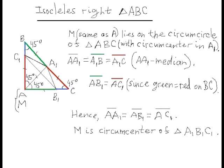We know from the previous lesson that points of tangency of excircles to two other sides of triangle ABC divide these sides into segments so that two green segments opposite to vertex C have equal lengths, two red segments opposite to vertex B have equal lengths, and two blue segments opposite to vertex A have equal lengths. Since segment AA1 is the median of right triangle ABC, its length is half of hypotenuse BC. So the lengths of segments AA1, AB1, and AC1 are equal, which proves that vertex A is the circumcenter of triangle A1B1C1. Hence, we have proved that any isosceles right triangle has property M.